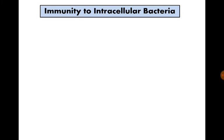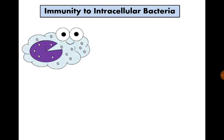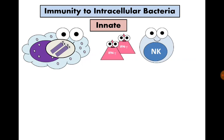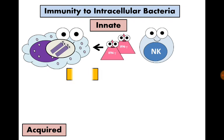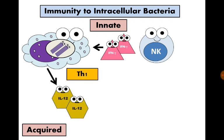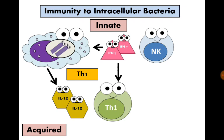What is our body's response against intracellular bacteria, like mycobacteria that live in macrophages? Early, natural killer cells are the source of interferon gamma that activate macrophages to be able to kill those bacteria inside. Then macrophages secrete interleukin-12 that stimulate T-helper-1 response. Also, interferon gamma will promote T-helper-1 differentiation, which in turn secretes more interferon gamma.